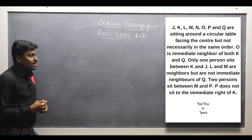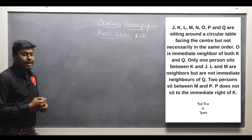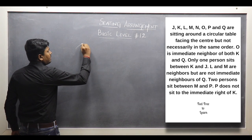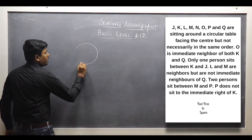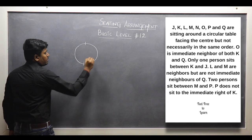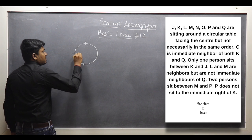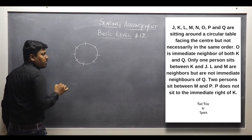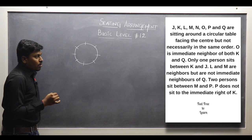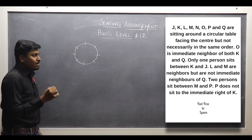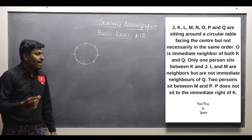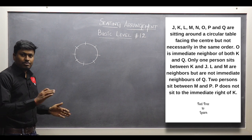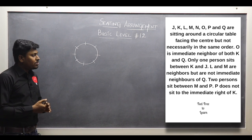First point: O is an immediate neighbor of both K and Q. So we can draw a circle and place the 8 persons. According to point number 1, O is an immediate neighbor of both K and Q.